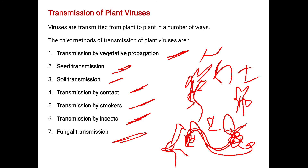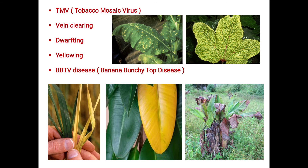The last mode is fungal transmission, where transmission can take place through fungal formation. These are the modes of transmission of plant viruses. In our syllabus, the prescribed diseases are TMV, vein clearing, drafting, yellow ink, and BBTV diseases — we are going to focus on tobacco mosaic virus, vein clearing, drafting, yellow ink, and banana bunchy top diseases.